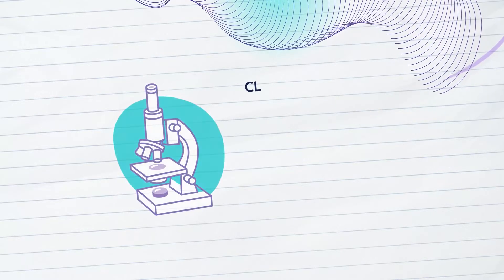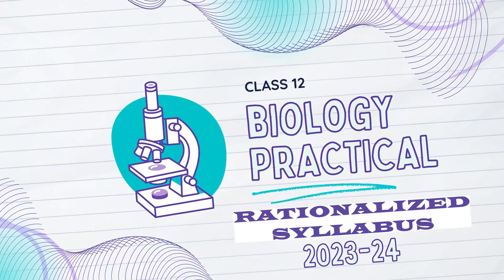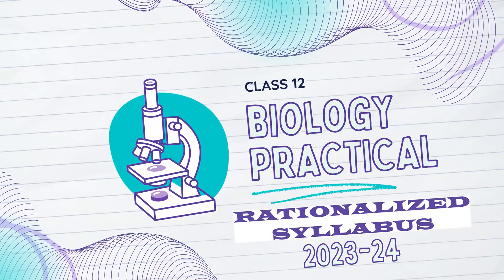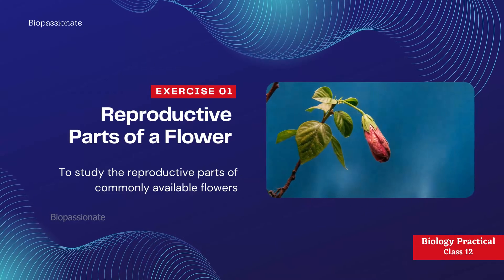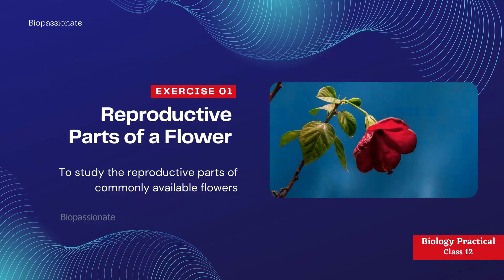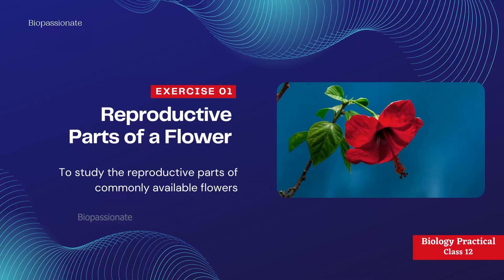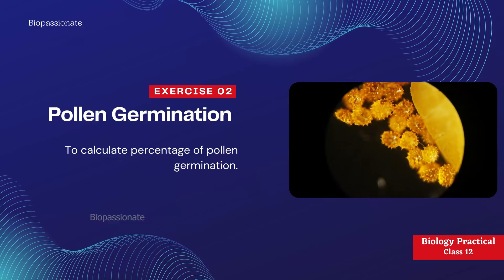Welcome to Biopassionate. In this video, Biopassionate presents the list of biology practical experiments from the rationalized syllabus. Exercise number one: reproductive parts of a flower — to study the reproductive parts of commonly available flowers. In this experiment, you will study the androecium, gynoecium, the transverse section of anther, and the transverse section of ovary.